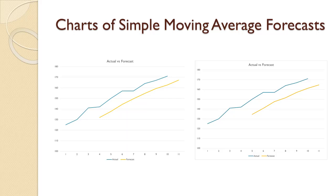This slide shows two forecasts we produced in a prior video using simple moving averages. The demand data is in blue on both charts and the forecast is in orange. The chart on the left is a three period simple moving average and the chart on the right is a four period simple moving average. Do you see a problem with the forecasts? You may want to pause the video and study them.